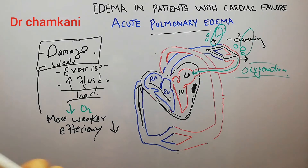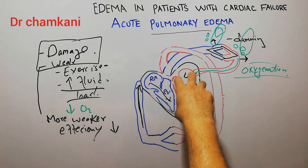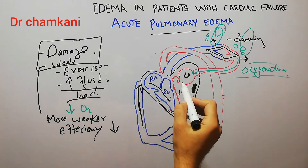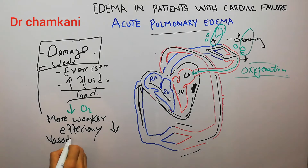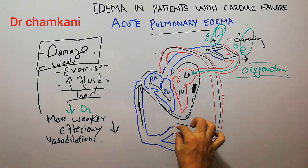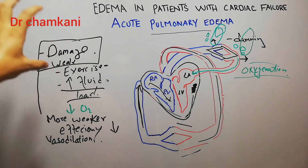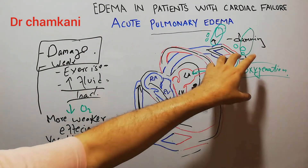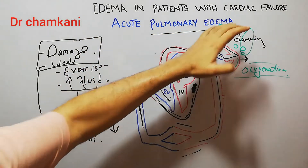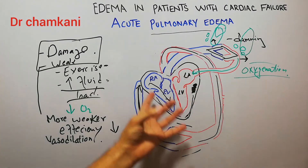When the heart's efficiency decreases more, the improperly oxygenated or deoxygenated blood going into the periphery leads to vasodilation in the periphery. When vasodilation occurs, the blood vessels dilate, their caliber increases, and more blood starts returning to the heart. So the heart was already damaged and weak, then fluid volume increased, the load on the weak heart increased, which led to damming of blood in the lungs causing acute pulmonary edema, and that acute pulmonary edema led to improper oxygenation — deoxygenated blood returning to the left side of the heart.